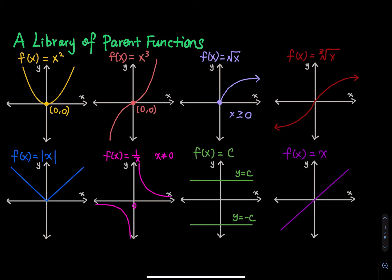For the cube root, x can be positive, negative, or zero. For radicals in general: when the index is even — like a square root, fourth root, sixth root, or eighth root — x must be greater than or equal to zero. When the index is odd — like the cube root, fifth root, seventh root, ninth root — x can be positive, negative, or zero.